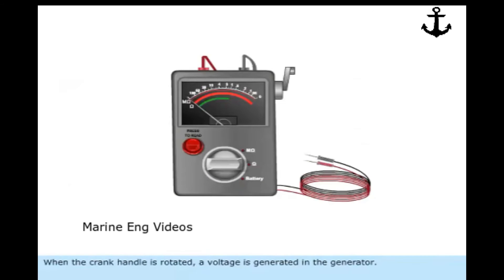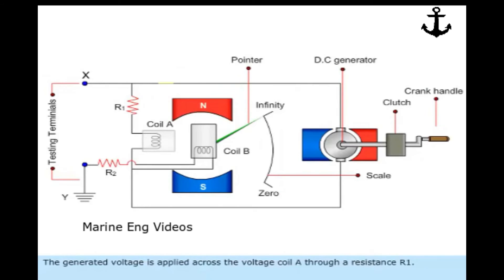When the crank handle is rotated, a voltage is generated in the generator. The generated voltage is applied across the voltage coil A through resistance R1.